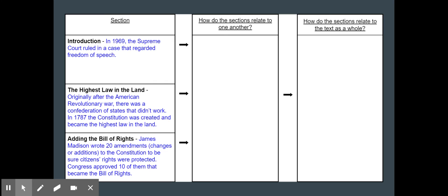That next section is talking about how James Madison wrote 20 amendments and amendment is a change or addition to the Constitution because there was not only James Madison but other people as well were wanting to make sure that citizens rights were protected.